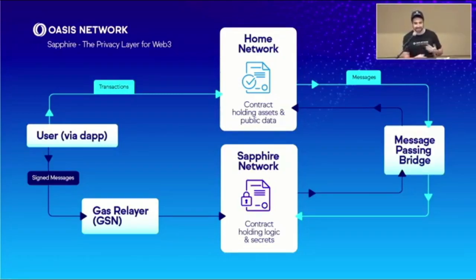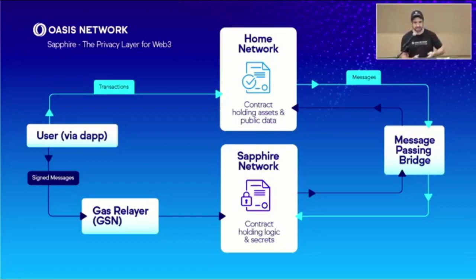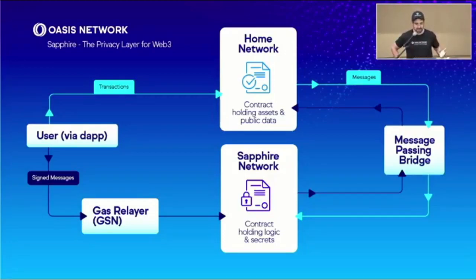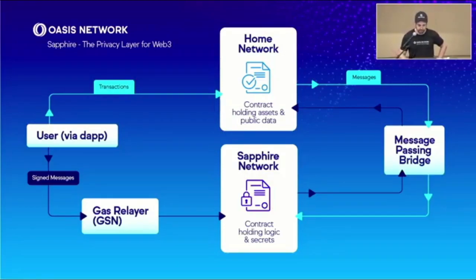When you want the results back in your layer one DApp, Sapphire sends a message back over the message-passing bridge to your layer one DApp, where you can do things like unlock tokens, create contracts, modify DAO settings, or perform a contract upgrade. That's the basic idea of the Oasis Privacy Layer.